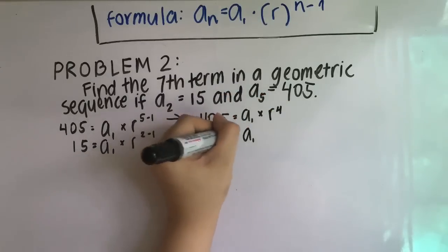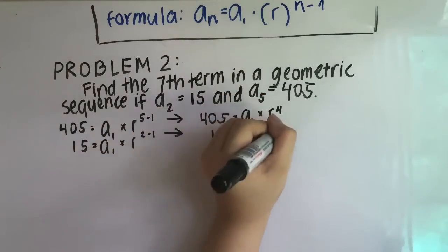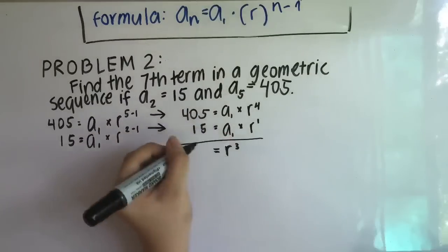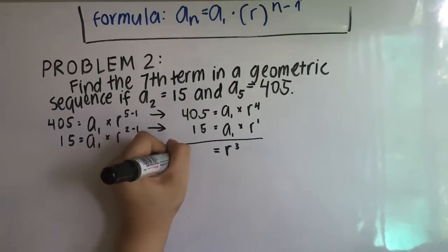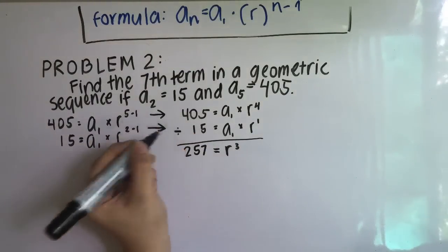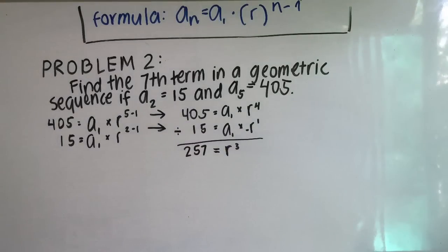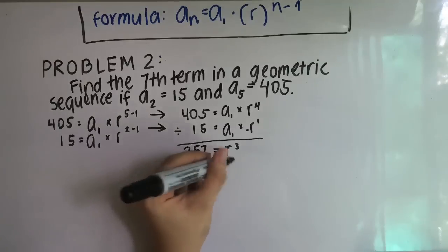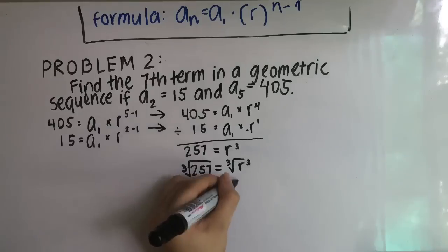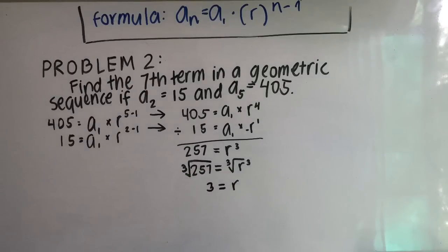We will then divide that by 15 equals a sub 1 times r raised to 1. The quotient of 405 and 15 is 27. We will cancel a sub 1, and following the rule of exponents, r raised to 4 divided by r raised to 1, we subtract 1 from 4, giving us r raised to 3. The equation we have now is 27 equals r raised to 3. To cancel the 3, we take the cube root of both sides, giving us r equals 3. That is our common ratio.